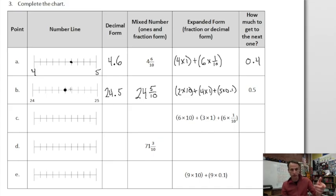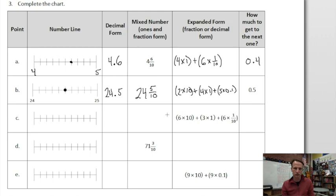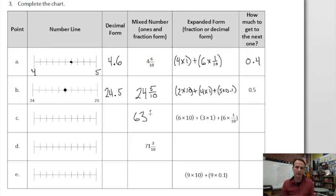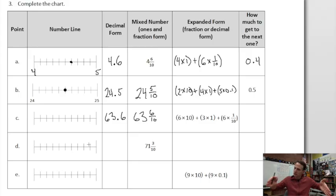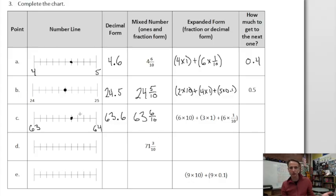Row c gives us expanded form in fraction form. The mixed number is sixty-three and six tenths — 63 is the whole number, and six one-tenths is six tenths. In decimal form: 63.6. For the number line, 63 cakes and six tenths of another — it's between 63 and 64. One, two, three, four, five, six tenths right there. How much more to the next one? One, two, three, four tenths — we'll write all these as decimals, 0.4.